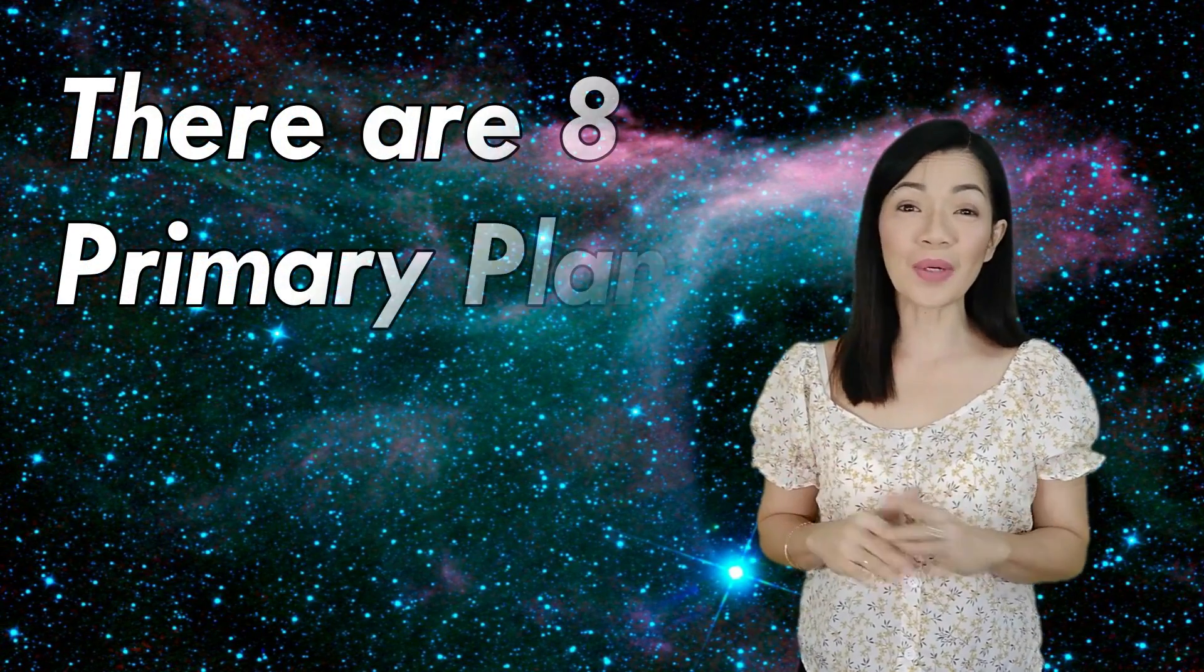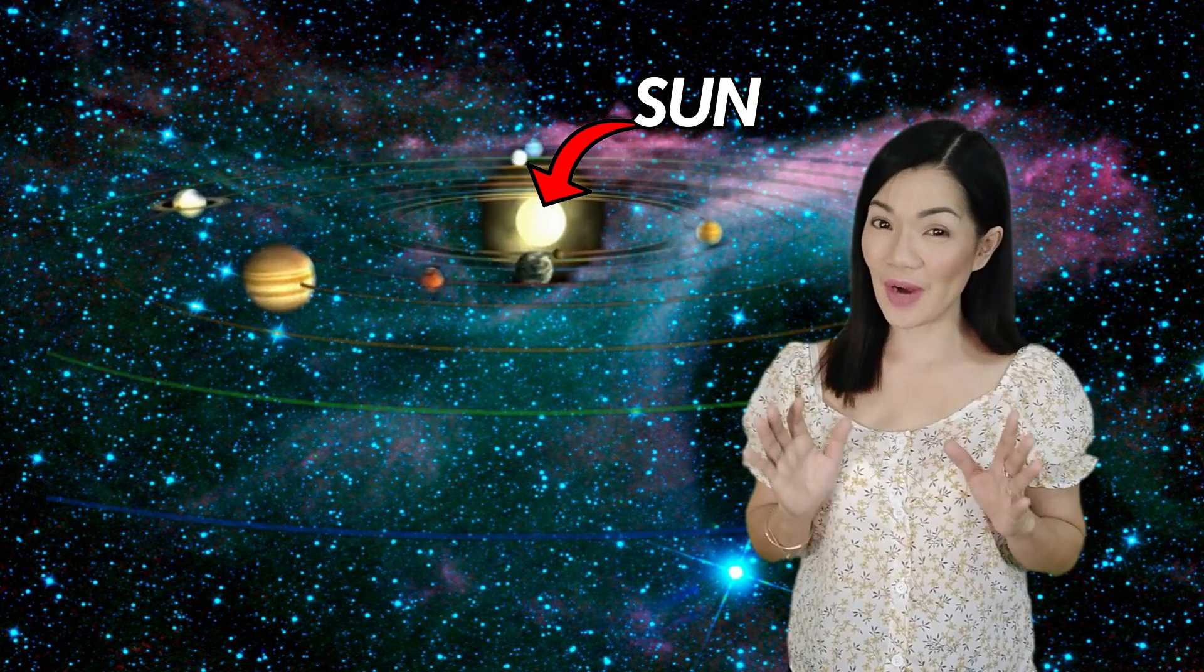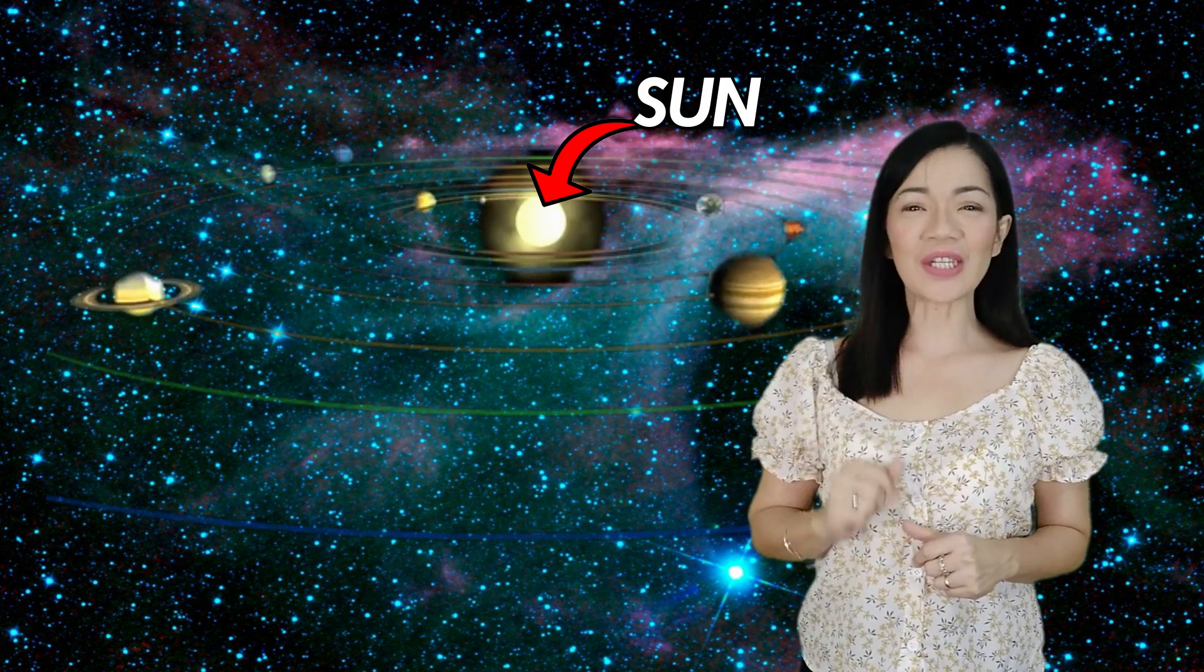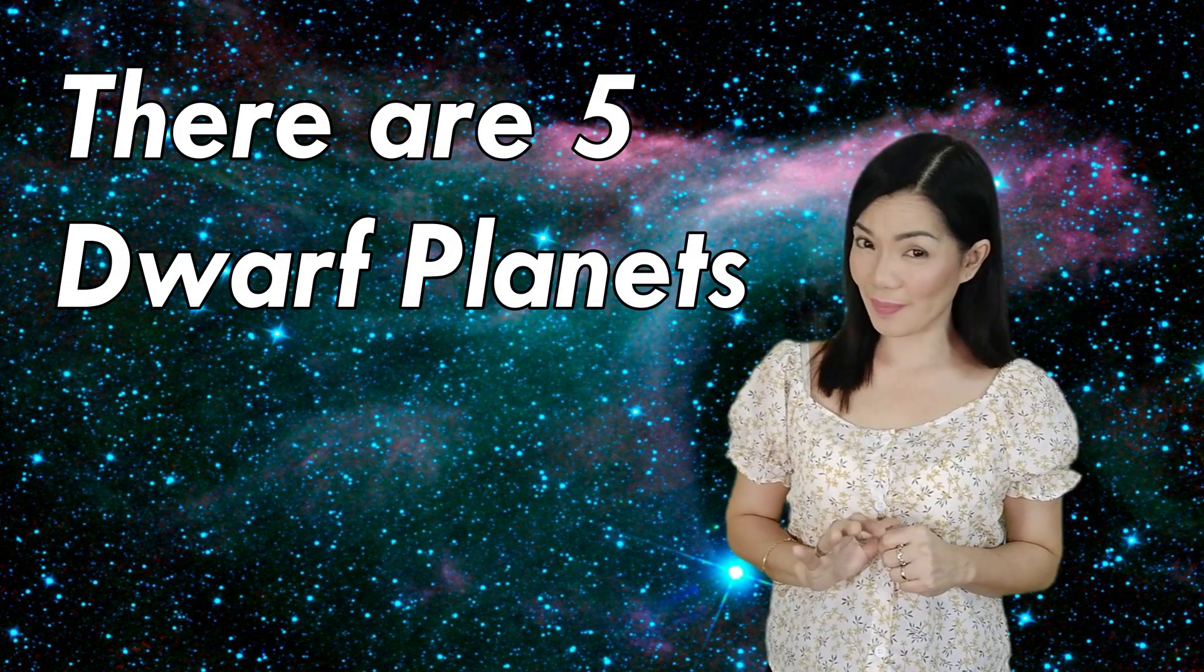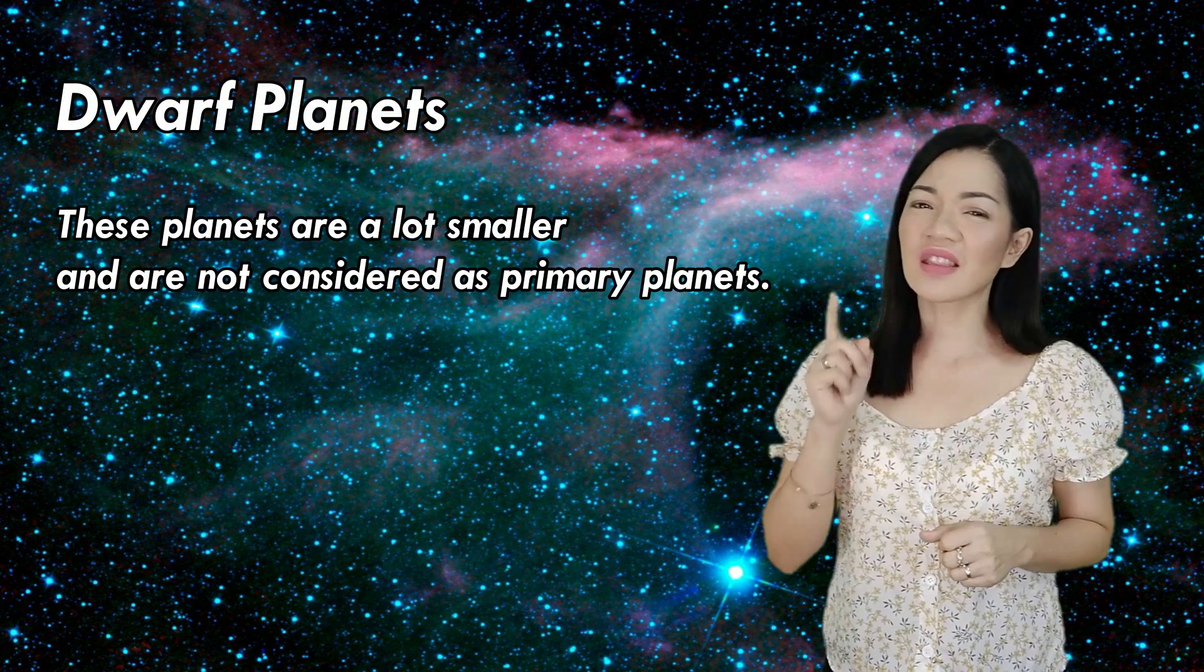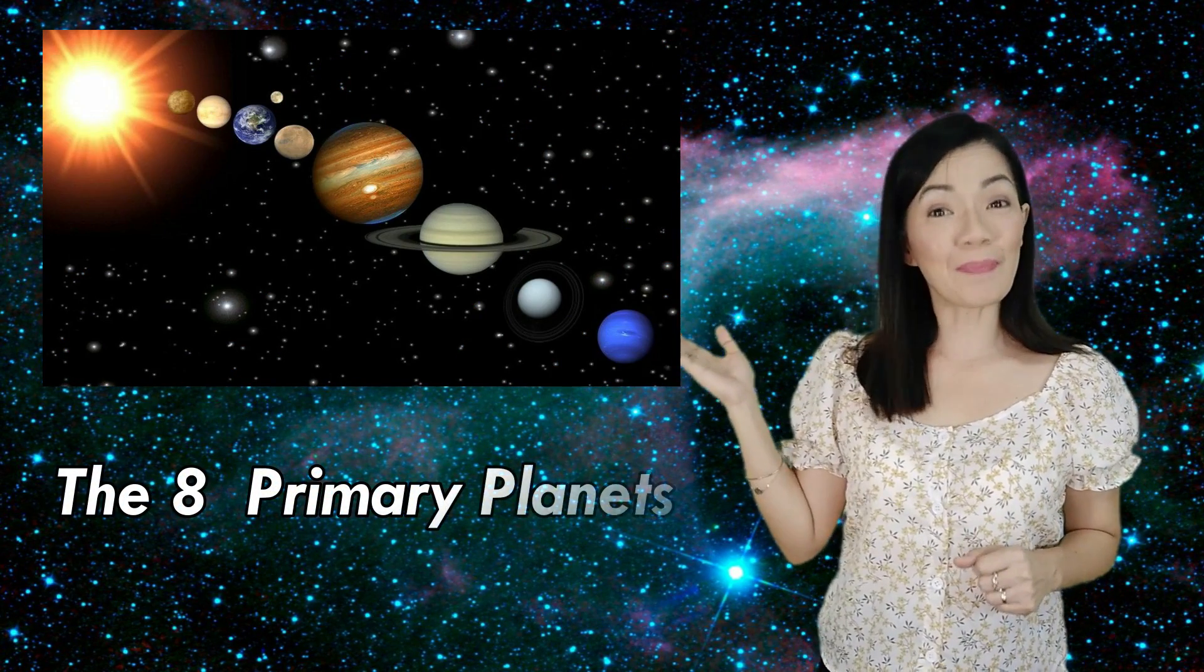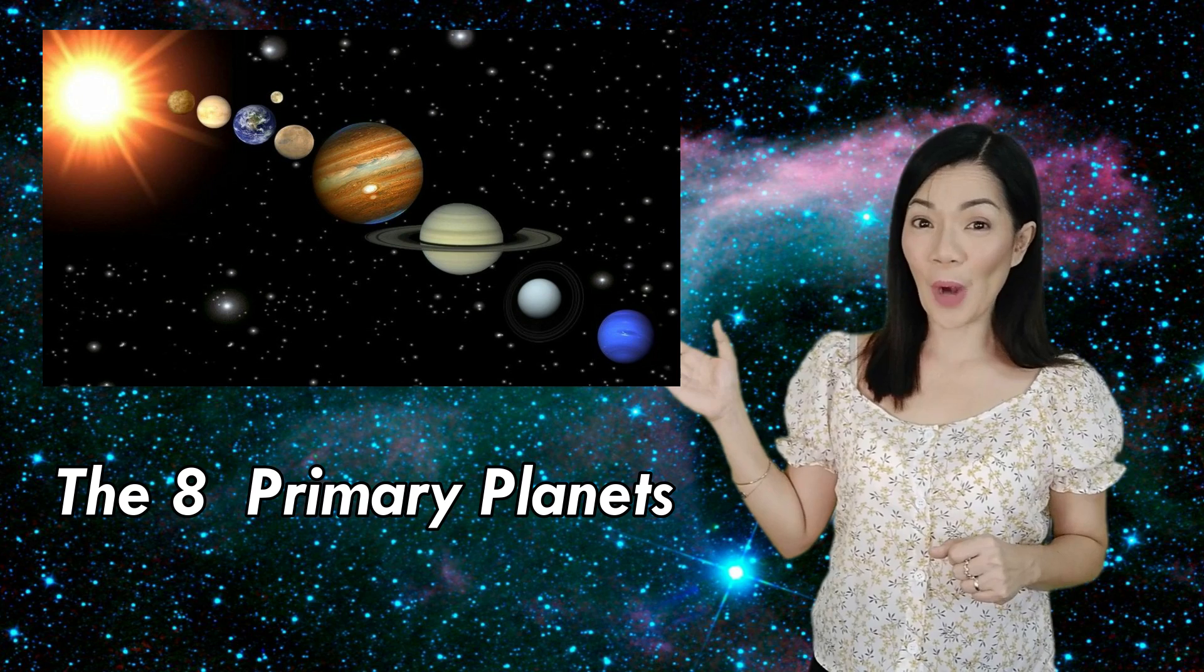Now, there are eight primary planets. These are the main planets that you think of that are circling around the sun. And these are the planets that we're going to be studying in this video. And then, there are five dwarf planets. These planets are a lot smaller and not considered as primary planets. There they are! The primary planets! You're going to get to know all of these eight primary planets.